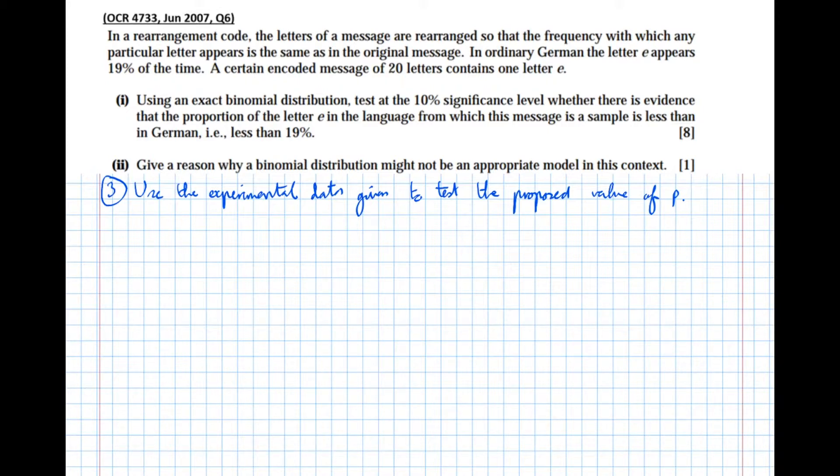So it says here that a certain encoded message of 20 letters. Okay so now we can see that this is a binomial distribution and we'll play the game 20 times, we'll check 20 letters. The frequency and we're assuming that we're telling the truth is 19 percent, and our observed data is X is 1.